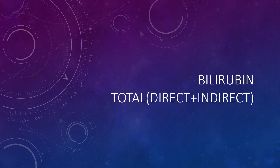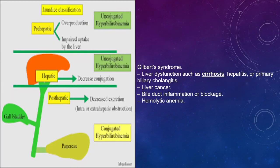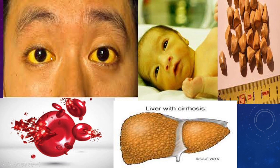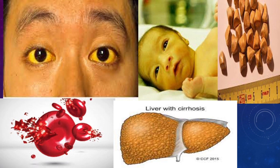The first component is total bilirubin. Bilirubin is a waste product. When the liver cannot clear it, bilirubin levels rise and may manifest as jaundice — yellow discoloration of the sclera, which is the most common symptom. High bilirubin can also indicate cirrhosis or damage to the liver.